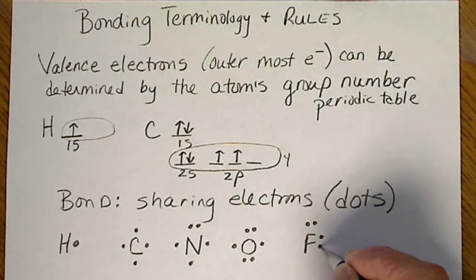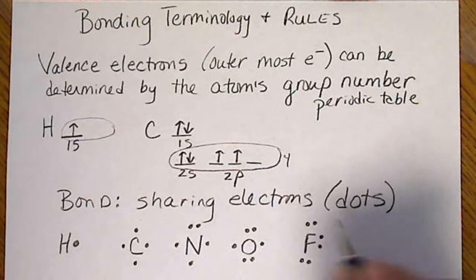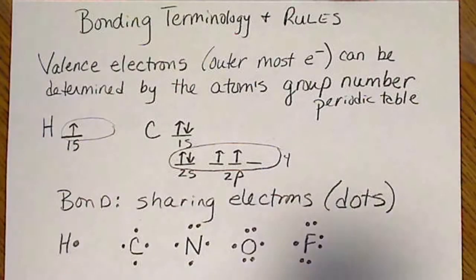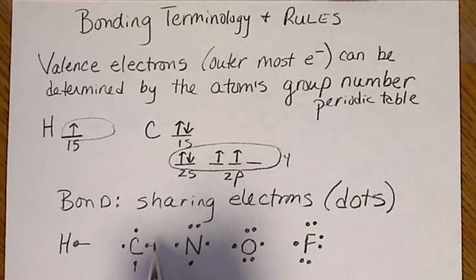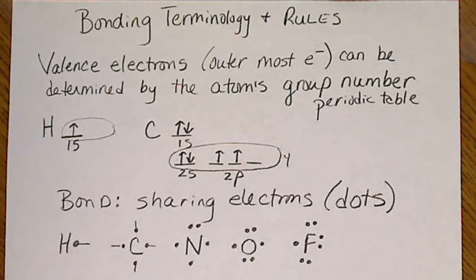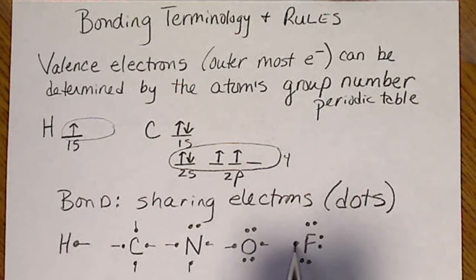And this will help us if there's more than one possible structure to draw. We're going to see that hydrogen only ever has one atom connected to it. Carbon generally has four lines to it. Nitrogen generally has three. Oxygen has two. And chlorine has one.